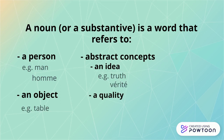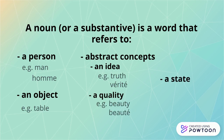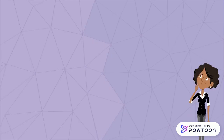A noun can also refer to a quality — 'beauty' in English, 'beauté' in French — or a state, for instance 'happiness' in English, 'bonheur' in French.